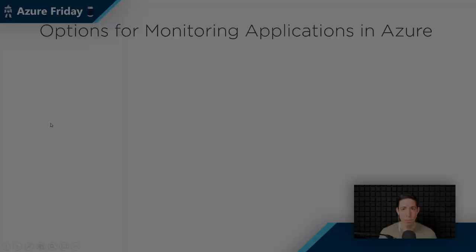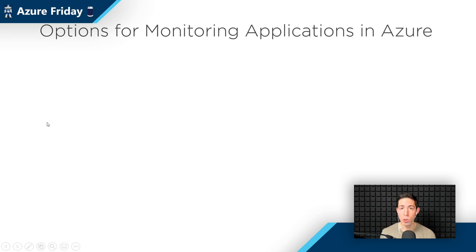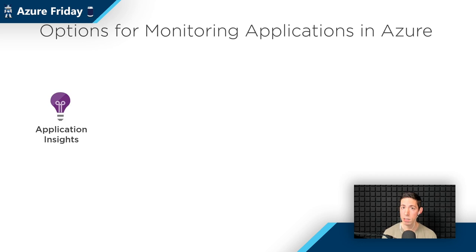Some services are meant for just monitoring one app. Some services are meant for monitoring security, for instance. So in Azure, you have multiple options for monitoring your applications. One of those is Application Insights, which is actually a feature of Azure Monitor. You use Azure Application Insights to monitor a single application — in a web application or a desktop application. And then there's Visual Studio App Center, also meant for monitoring a single application — specifically a mobile application.